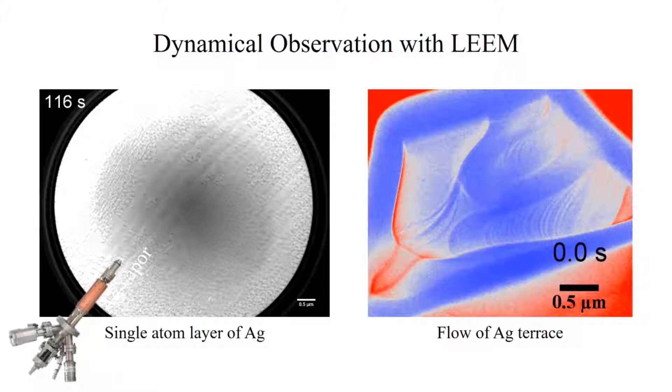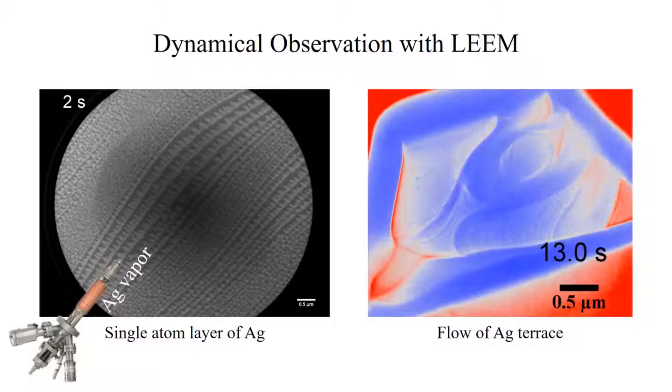The second movie is the nucleation of a silver island, where we observe crystal terraces flow in space as the island grows.